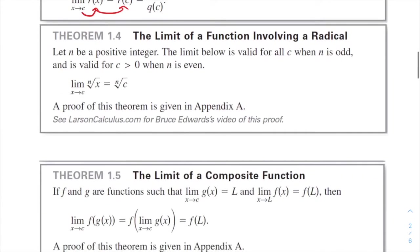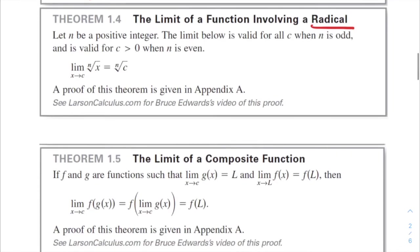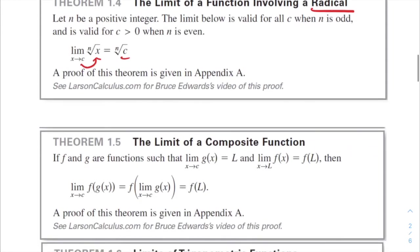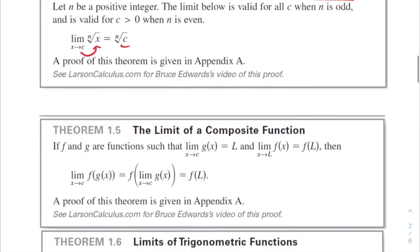Theorem 1.4 covers limits of functions involving a radical. Let n be a positive integer. The limit is valid for all c when n is odd, and valid for c greater than zero when n is even. Even with square roots or radicals, the same rule applies — the limit as x approaches c gives us c plugged in under the radical. We're really running through all operations to handle limit problems.